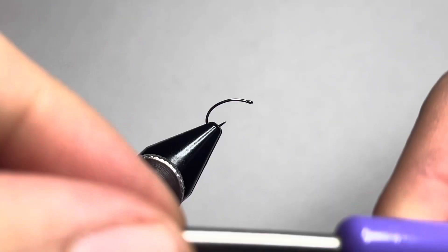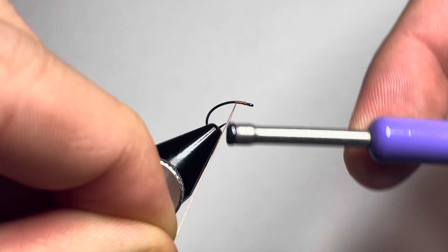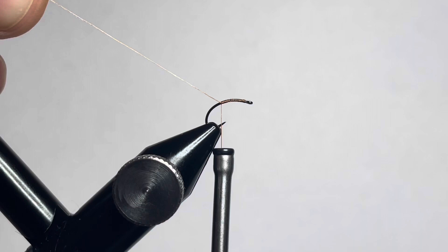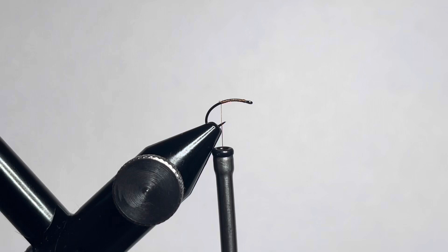Today we're tying up a two-toned worm. Let's go ahead and get our thread started. We're using some Semperfly NanoSilk in 50 denier or 12 ott, and the color is copper. We're gonna lay a thread base down on our hook. We're using a Partridge clink hammer hook in size 18.